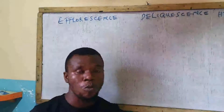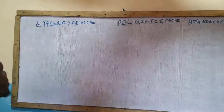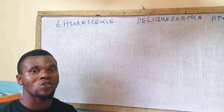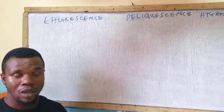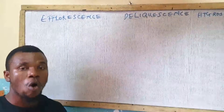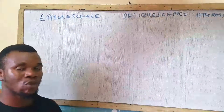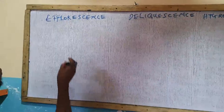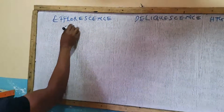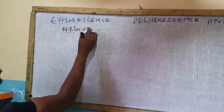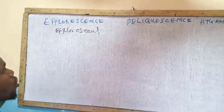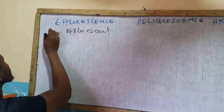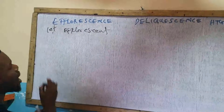Today we are looking at efflorescence, deliquescence, and hygroscopy in chemistry. Efflorescence is a phenomenon whereby a salt or substance, when exposed to the atmosphere, tends to lose its water of crystallization or moisture, and remains in anhydrous form, having previously existed in hydrated form. Such salts are described as efflorescent salts, and the phenomenon is called efflorescence.